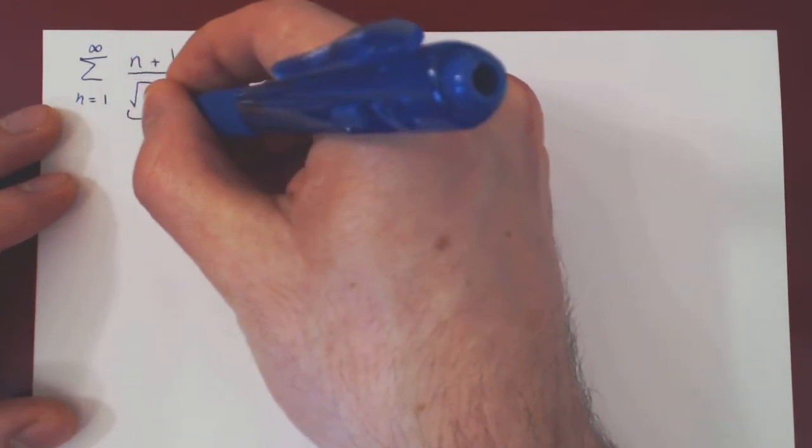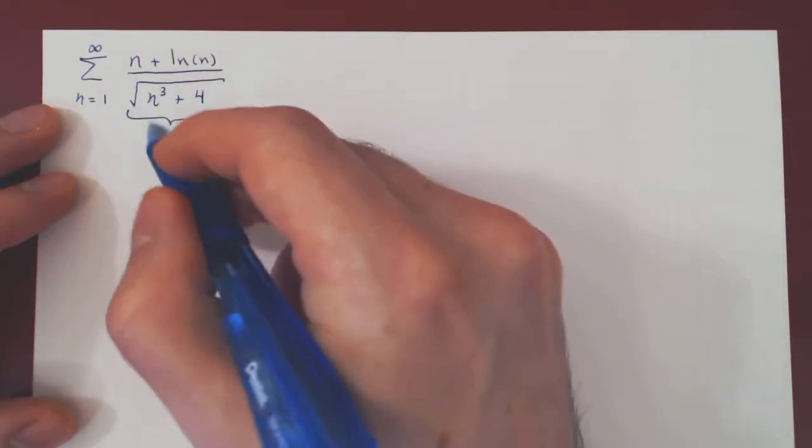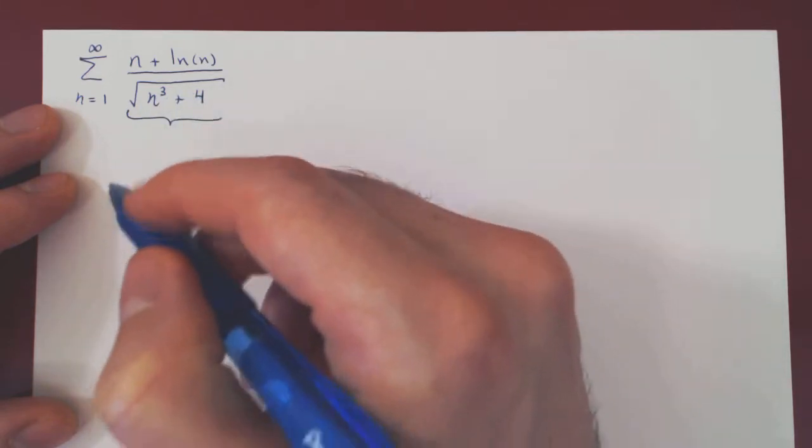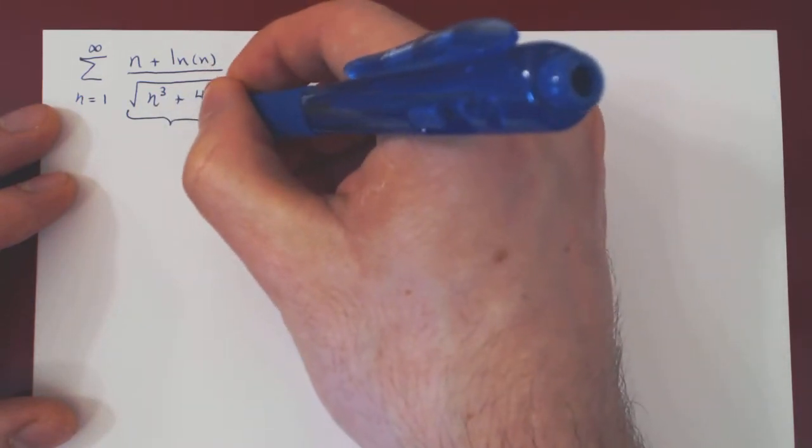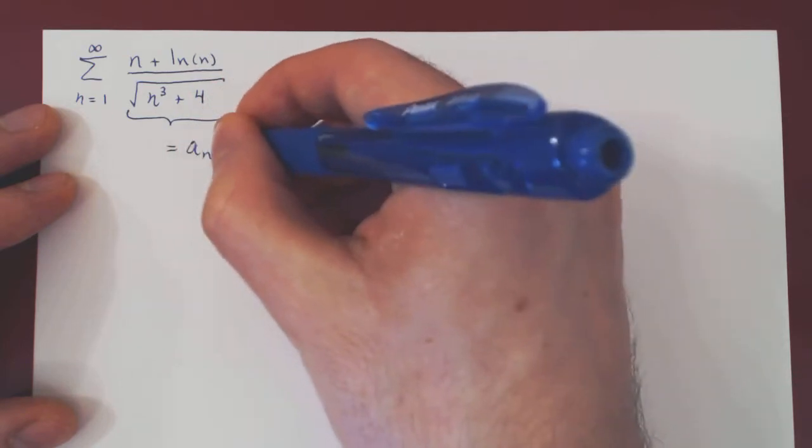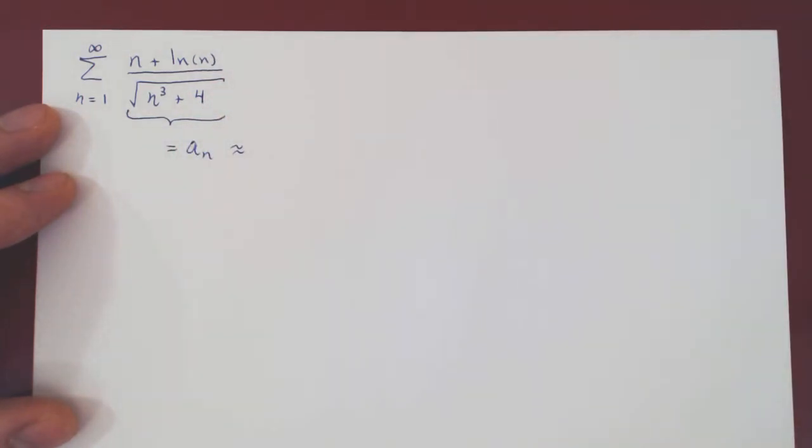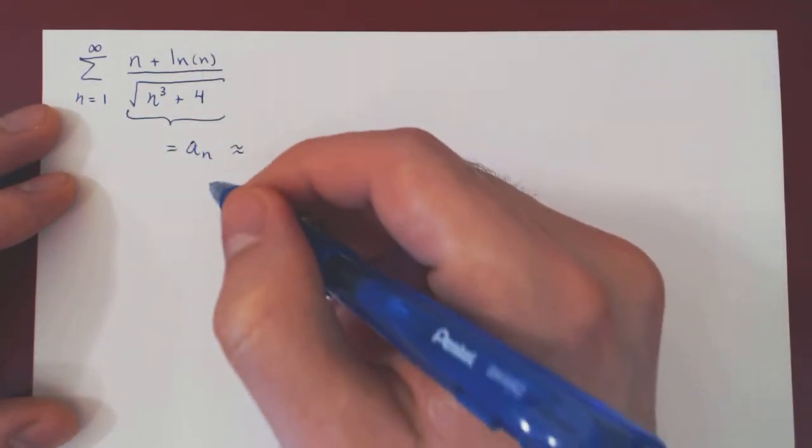So, we are summing the terms n plus ln over the square root of n cubed plus 4. So this is our original sequence, an. And as always, to obtain the new sequence bn, the simpler sequence bn,